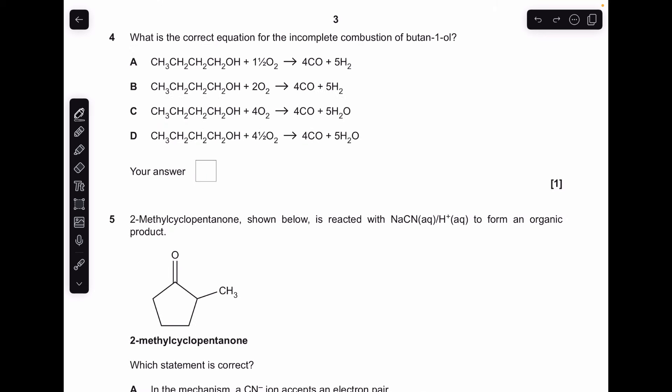Moving on to number 4. There's two we can rule out straight away. A and B because they've made hydrogen, not H2O. So basically it's just how many moles of oxygen do we need to balance the equation. We've got 4 oxygens in CO2, 5 in H2O. So 9 oxygens. There's 1 in the alcohol so we need another 8. So it was C with the 4O2.